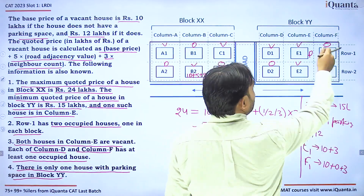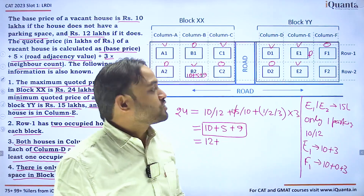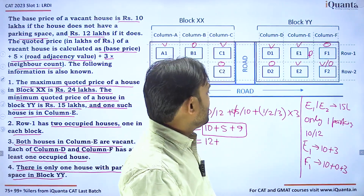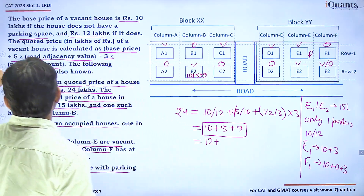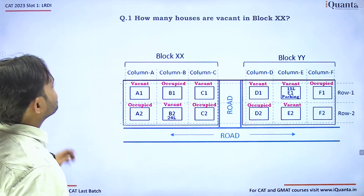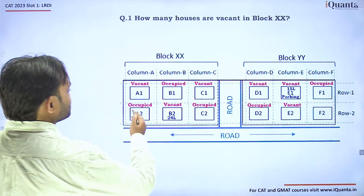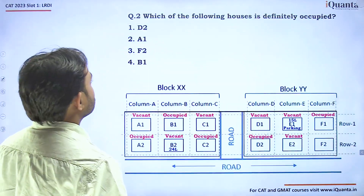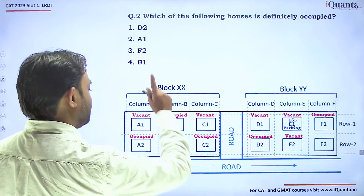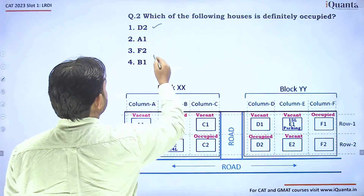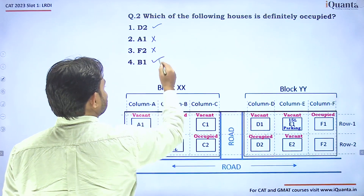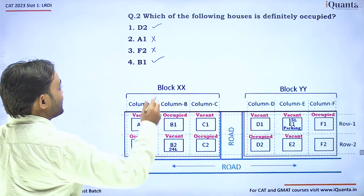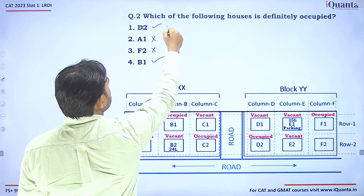F2 could be either vacant or occupied — we don't know. Now for the questions: Q1 — how many houses are vacant in Block XX? A1, C1, and B2 are vacant, so exactly 3. Q2 — which house is definitely occupied? D2 is yes, A1 is no, F2 we can't say, B1 is yes. Two options appear correct, suggesting an error — the option likely should have been B2 instead of something else.